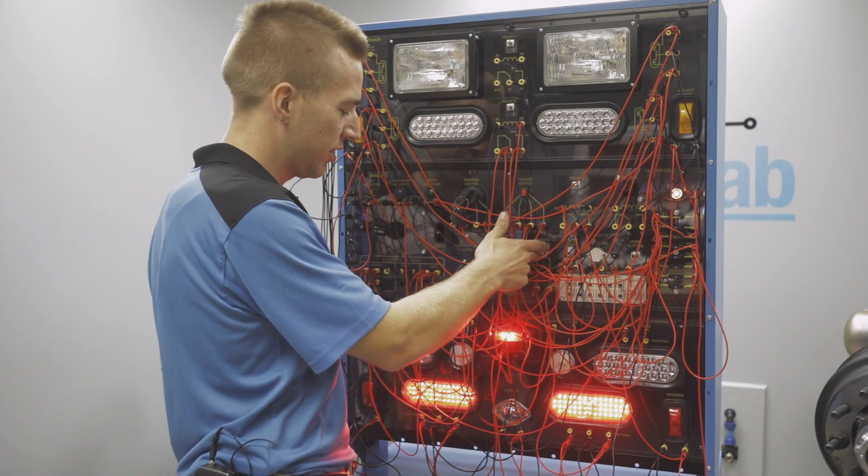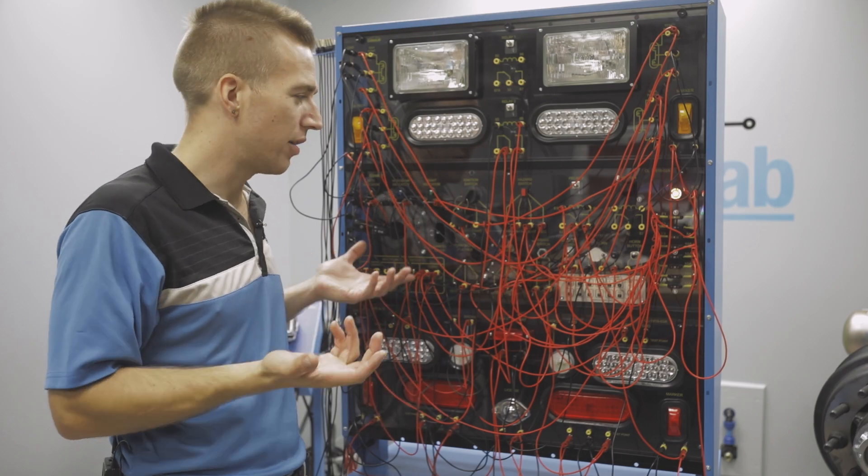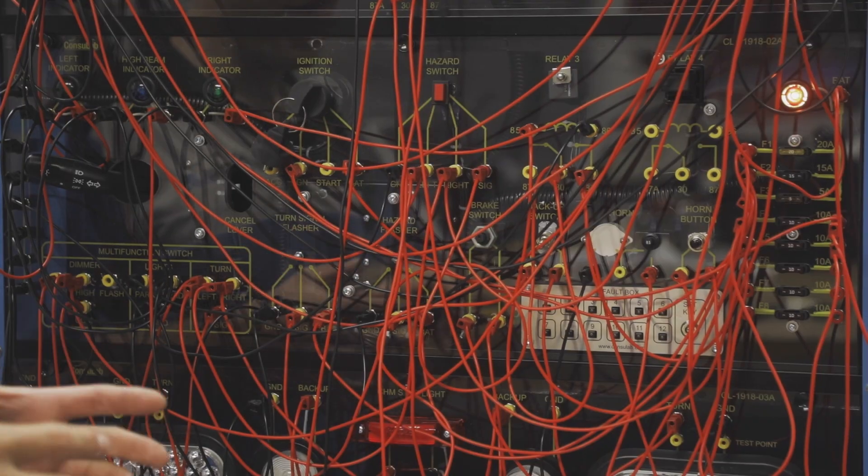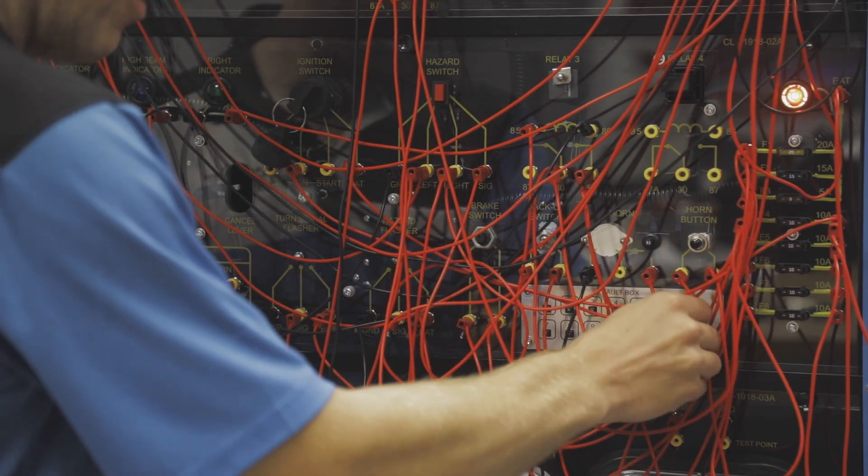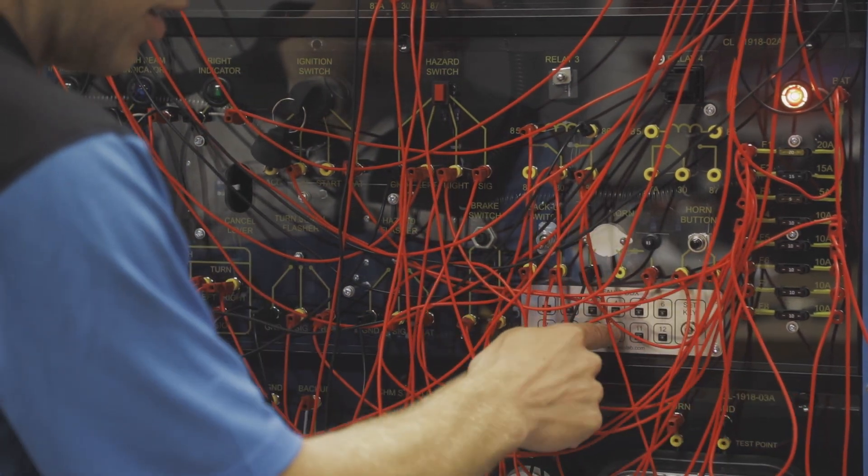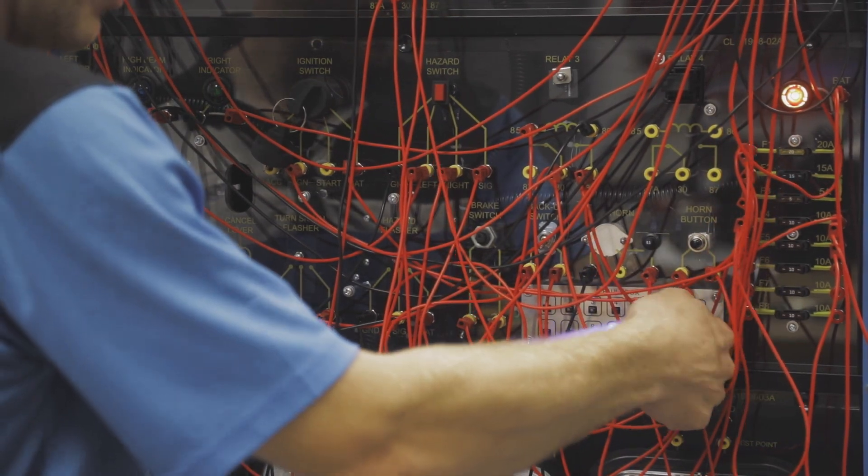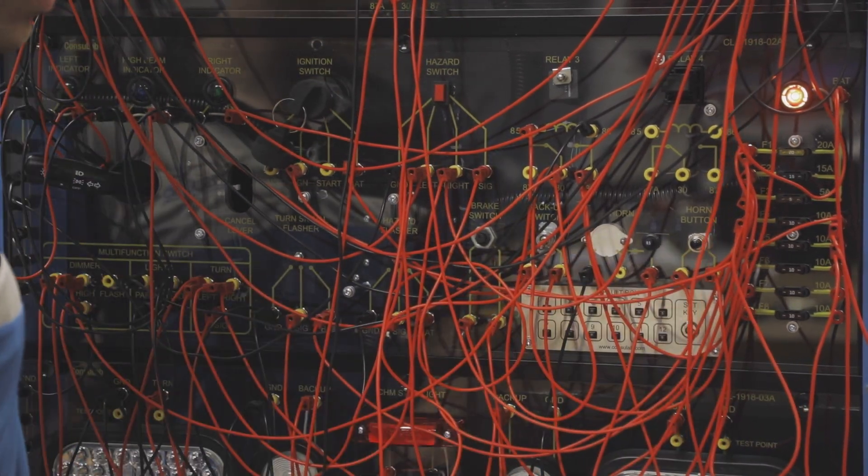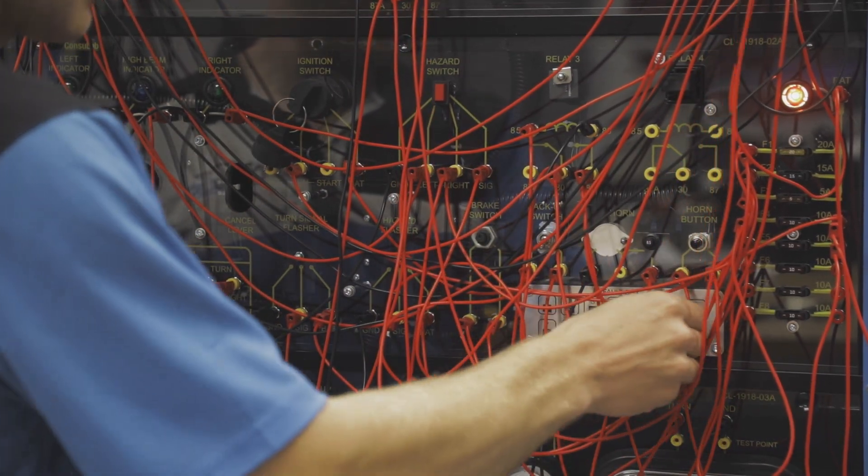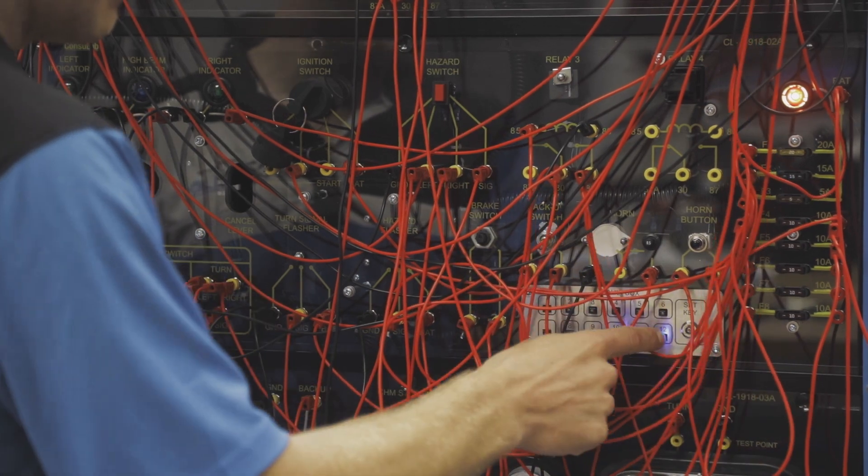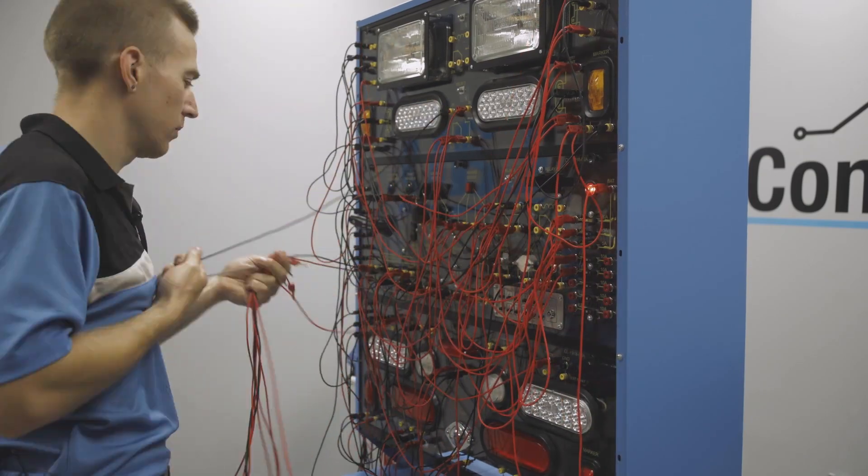We've got a fully functional system of everything that you would find on the car. As an instructor, what you can do is take your little key, get into the fault box, and turn on different faults in the system. Students don't know what faults are in there and they can't have access. We can do that for 12 different circuits in the system with very interesting, very real world faults.